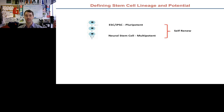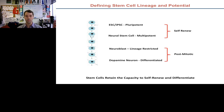If we further differentiate neural stem cells, we get a lineage-restricted neuroblast, and we can move that cell towards a dopamine neuron or a fully differentiated postmitotic neuron. These postmitotic cells don't self-renew — the number you start with is the number you have at the end. The beauty of stem cells from a regenerative medicine standpoint is their capacity to both self-renew and differentiate into very specific cell types for therapy.